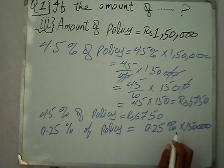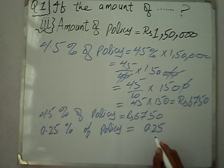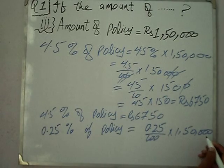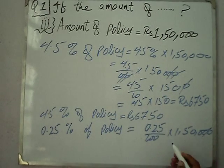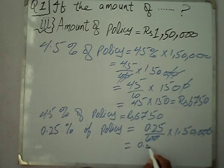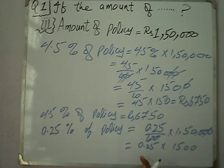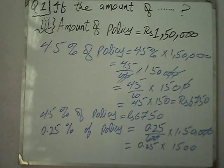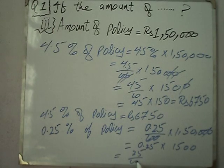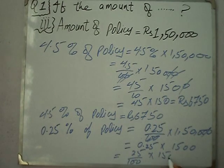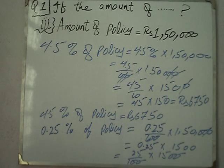0.25% of ₹1,50,000 — percentage comes in the denominator as 100. So we have 25 over 100 multiplied by 1,500. After cancellation, we get 25 multiplied by 15, which gives us 375.